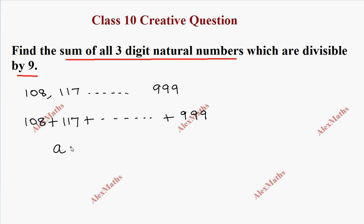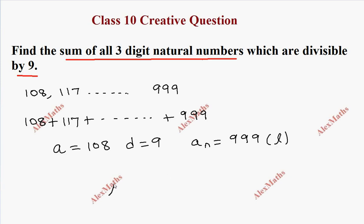This is an arithmetic progression. The first term A is 108, and D — the common difference — is the second term minus the first term, which is 9. The last term AN is 999. We use the formula: n = (L minus A) divided by D, plus 1.